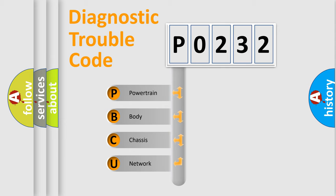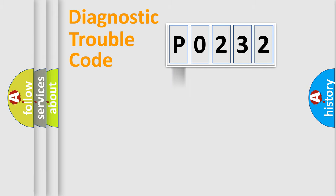We divide the electric system of automobile into the four basic units: Powertrain, Body, Chassis, and Network. This distribution is defined in the first character code.